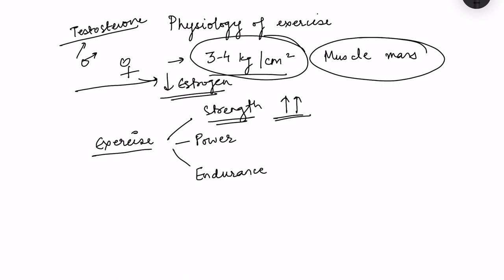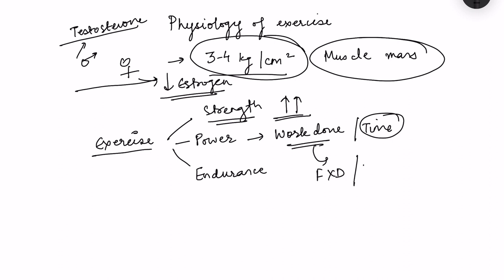Now what is power? Power, formula-wise, is work done per unit time. Work done means force into distance, divided by time. So when we talk of strength we consider only force, but when we talk about power we consider how far that force moves something and how fast or how slow it is being done.